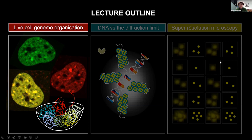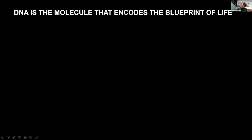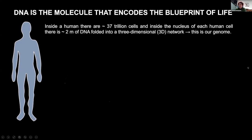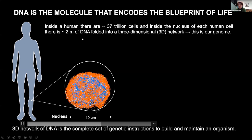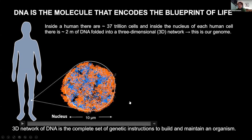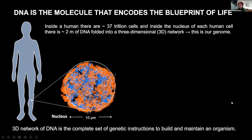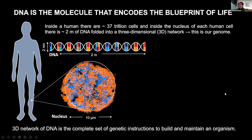To start with, I'll give you a background on how DNA is organized in your cell. DNA is the molecule that encodes the blueprint of life. Inside a human, there are around 37 trillion cells, and inside the nucleus of each of those cells, there's approximately two meters of DNA folded into a three-dimensional network — this represents our genome. The nucleus is around 10 microns in diameter, yet you have two meters of DNA folded into this tiny microscopic volume. This DNA network contains all the genetic instructions to build and maintain an organism. The way that DNA is packaged is important because it needs to be accessed by the proteins that read and copy your genetic information.